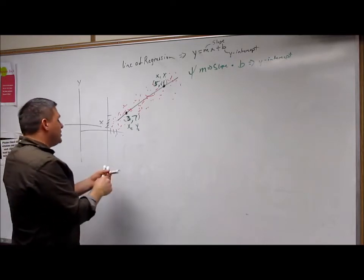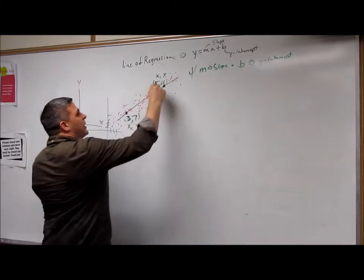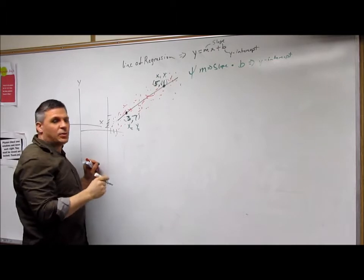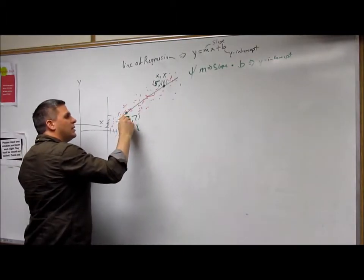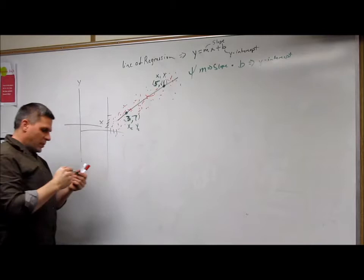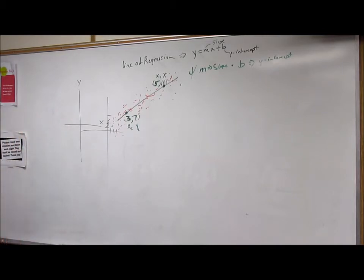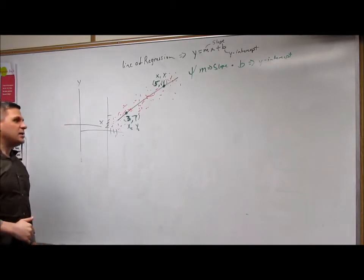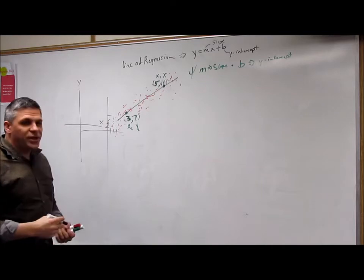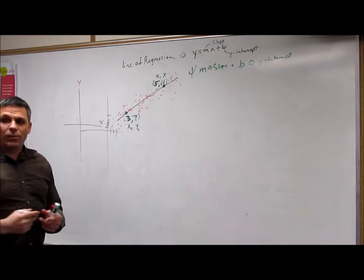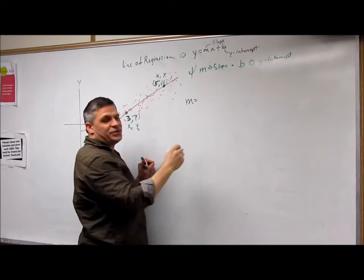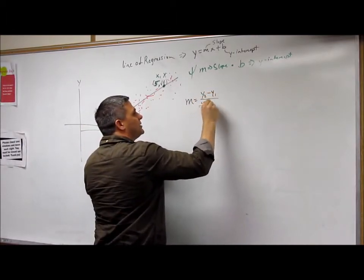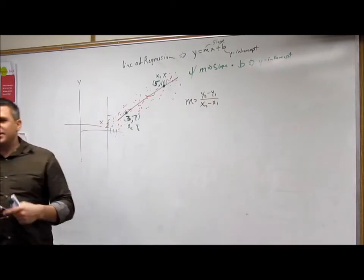So we found these two special points. These two special points was 5 and 11, that's the coordinate for it, and 3 and 7, that was the other coordinate. And when we go back in our brain and remember how to find the slope of a line, we remember that the equation for the slope is m equals y sub 2 minus y sub 1 over x sub 2 minus x sub 1.